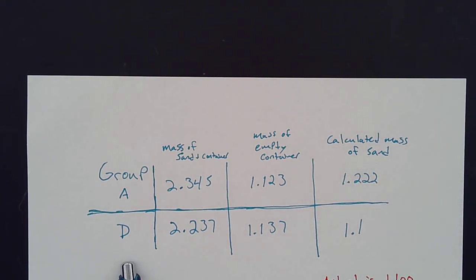Now another group, group D, they come up with the same idea. So they have an empty container, they have a mass of the container plus the sand, they subtract that empty container, and they get 1.1.